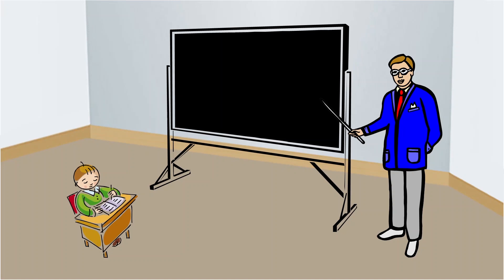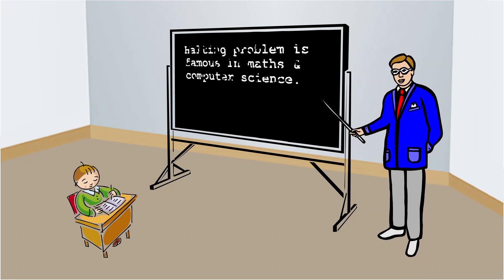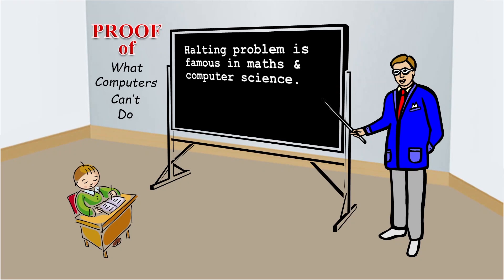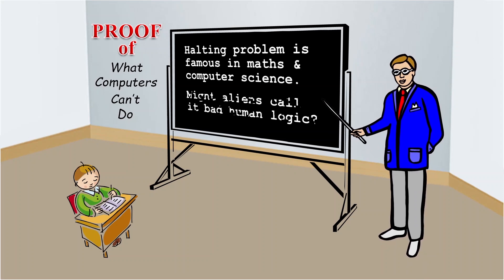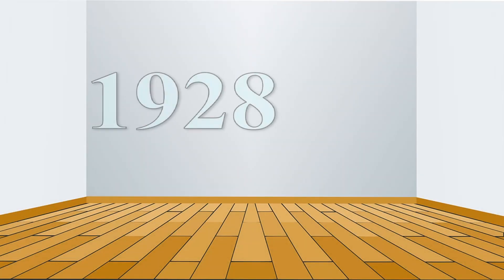The halting problem is really famous not just in the field of mathematics but also in computer science. The intriguing and easy to understand proof is supposed to demonstrate a task that computers find impossible to do. But are we fooling ourselves, and would a visitor from another world disagree with our clever sounding proof?